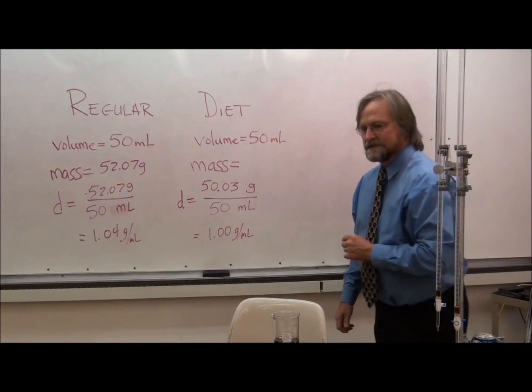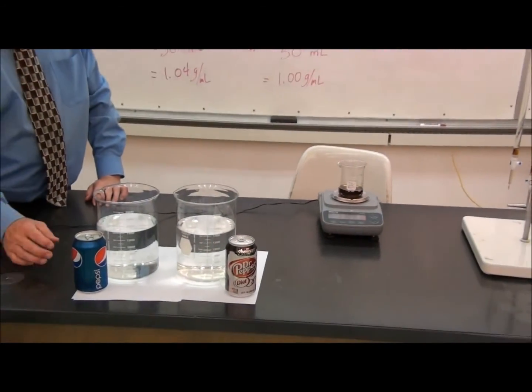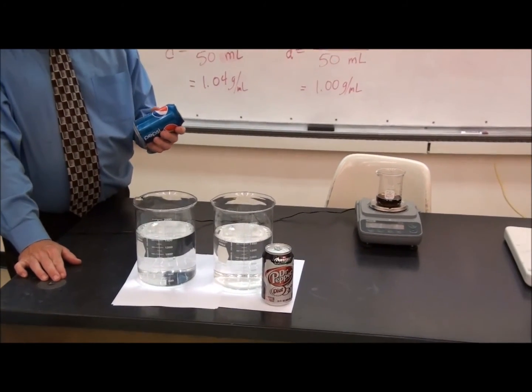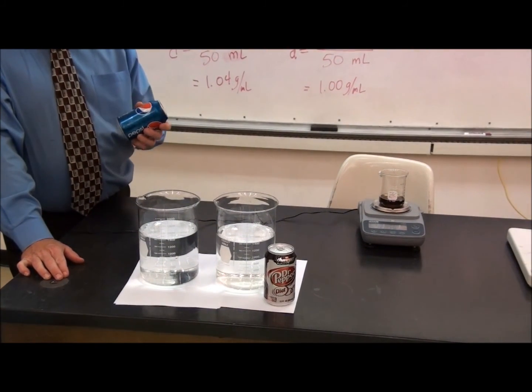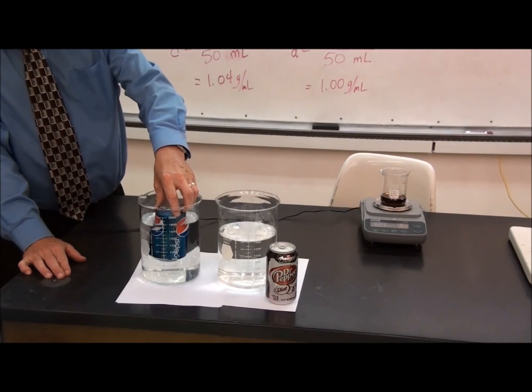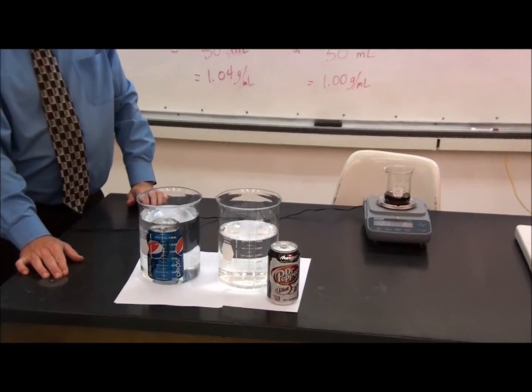Let's see what happens if we take a new can of regular Pepsi, which contains the Pepsi, the aluminum can material, and a little bit of air, and put it in a beaker of water. We see that its average density is greater than the density of water, and so it sinks.